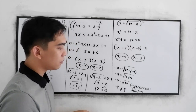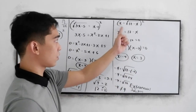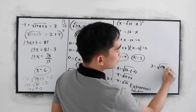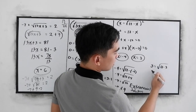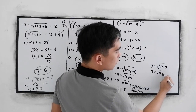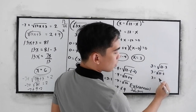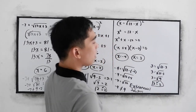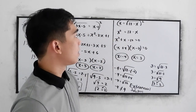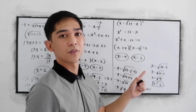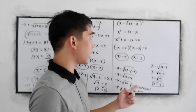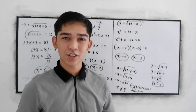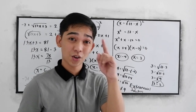How about x equals 3? We have 3 is equal to square root of 12 minus 3, which is square root of 9, which is 3. So 3 is equal to 3 — correct. The only solution for this equation is 3, because negative 4 is an extraneous solution. Thank you for watching Senior Pablo TV. See you in our next lesson.